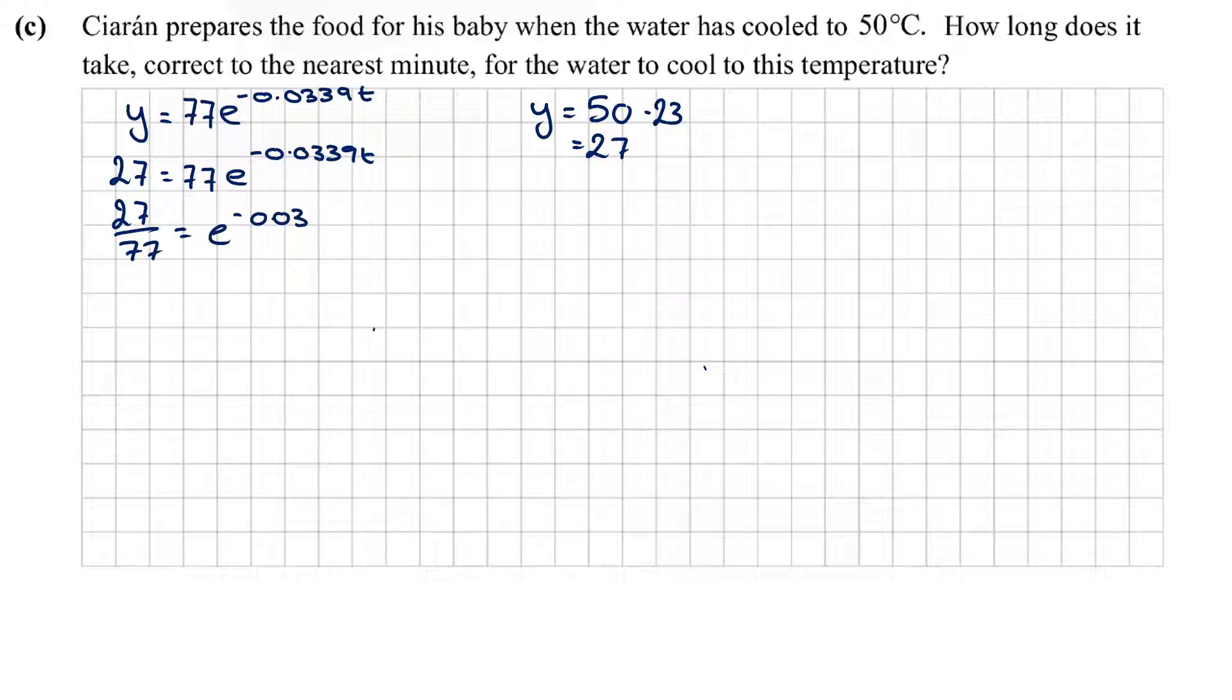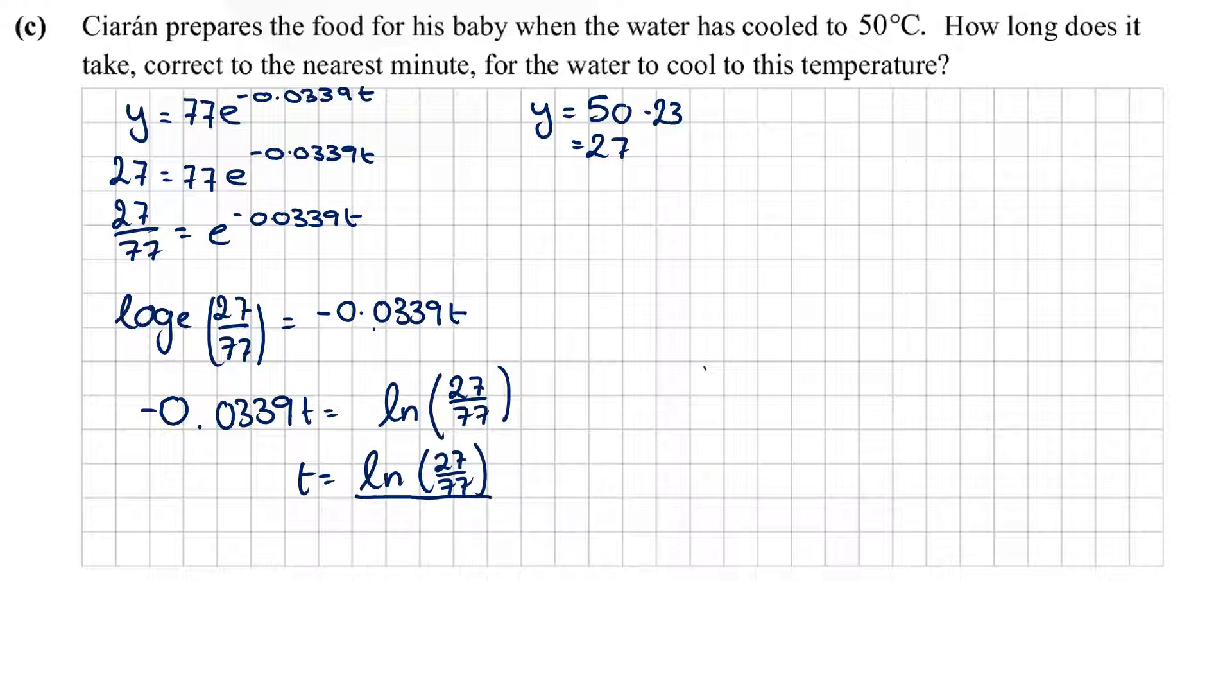I do log to base e of 27 over 77 equals minus 0.0339t. I'm just going to flip it to make it easier: minus 0.0339t equals ln of 27 over 77. I'm just going to put it into my calculator altogether: all of this divided by minus 0.0339, which gives us t equals 30.9 minutes. They want it correct to the nearest minute, so my time equals 31 minutes.